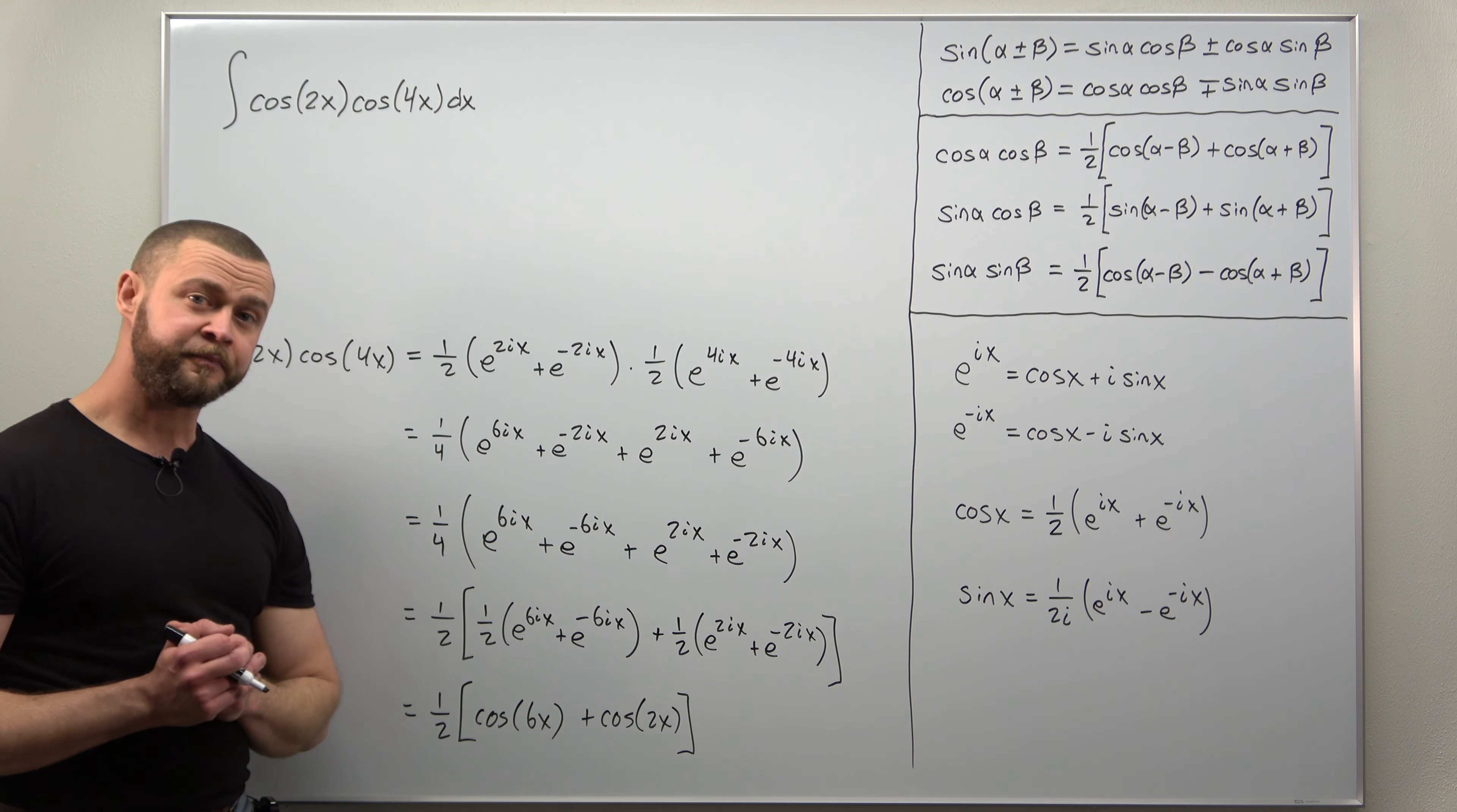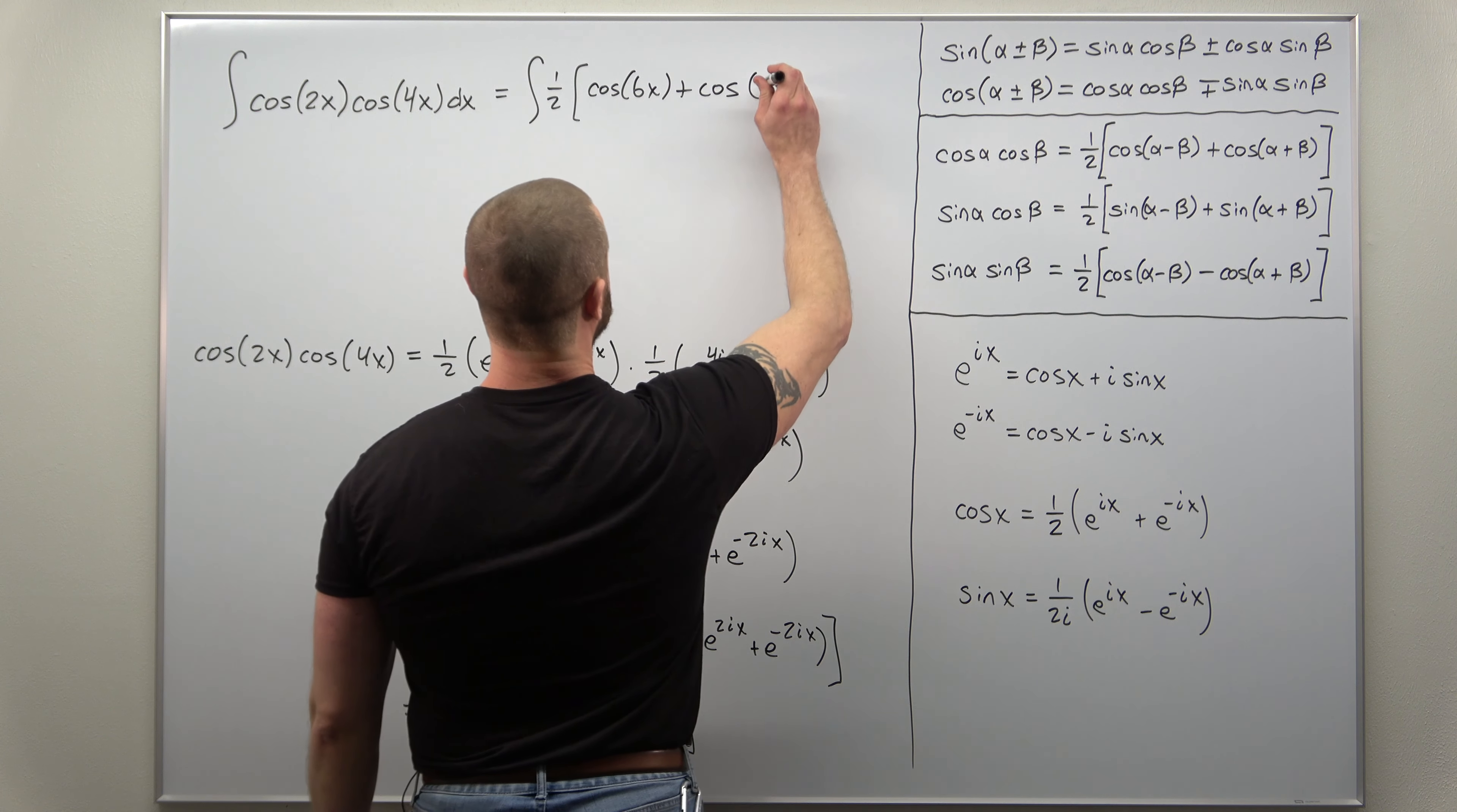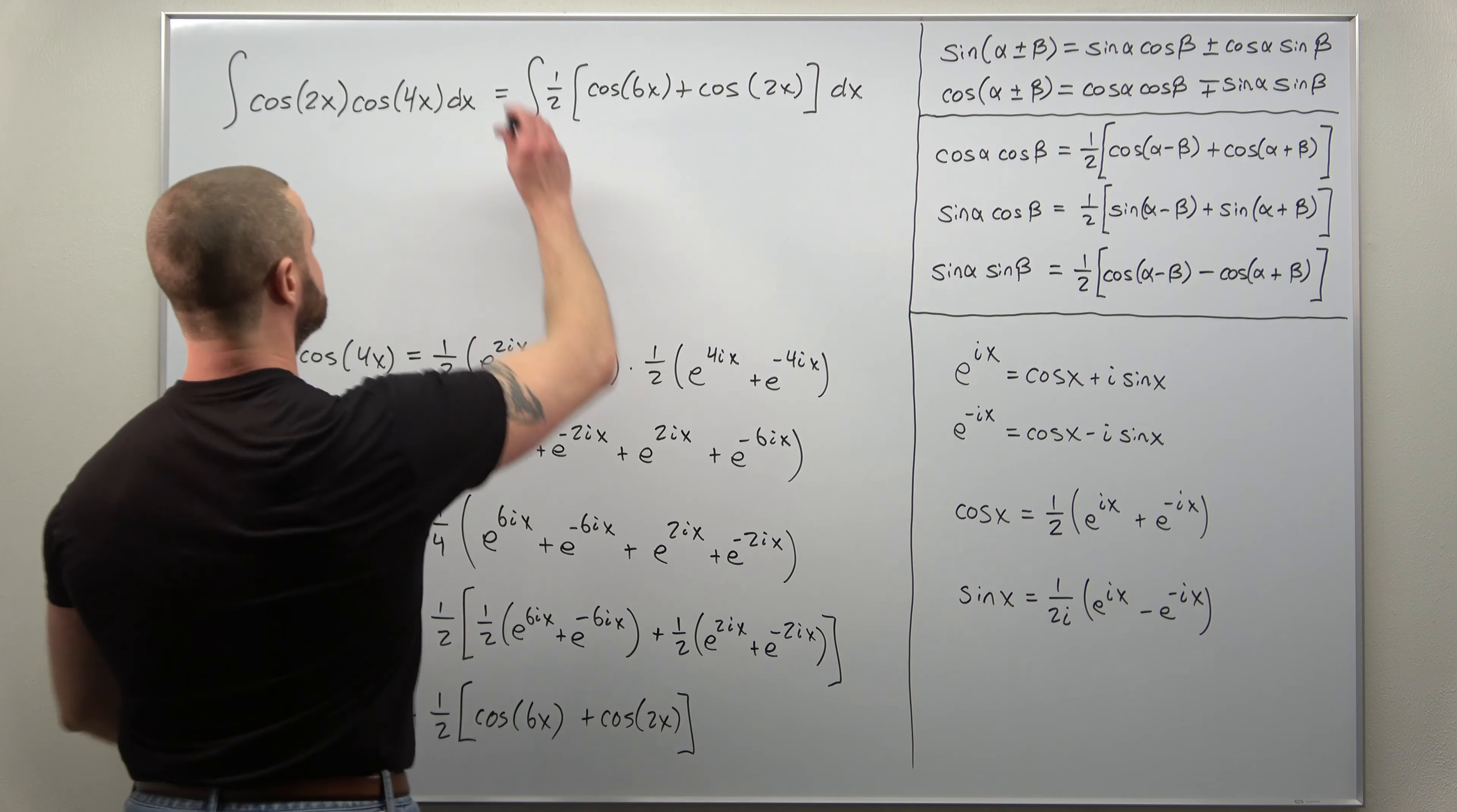With this, let's go ahead and now integrate. I'm going to replace my function with this identity: one-half times cosine of 6x, and then plus cosine of 2x. This will be very easy to integrate. Your basic anti-derivatives for cosine will be sine, and due to substitution, each of those anti-derivatives will give you factors of one-sixth and one-half respectively.